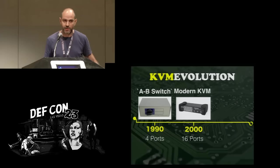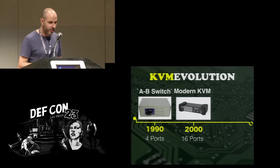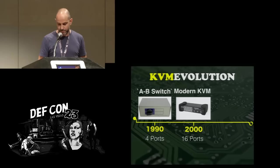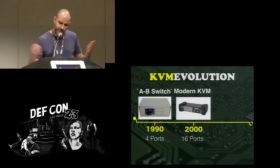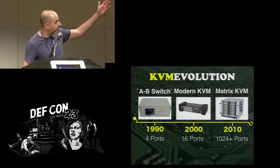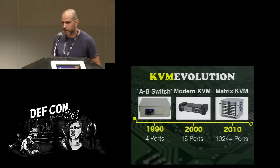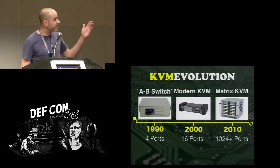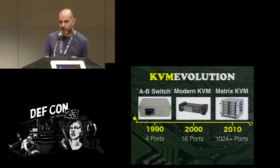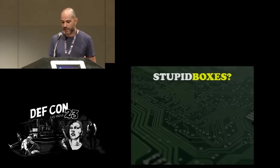Modern KVMs actually contain some kind of USB stack in order to provide smooth transitioning between ports, and a lot more features like DVI outputs, HDMI outputs, and support for a million types of keyboards. Then the next evolution of KVMs is what we call matrix KVMs — huge machines that control thousands of computers in really big environments. A lot of guys still consider these as those same old stupid boxes, but obviously they are not.